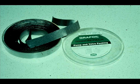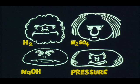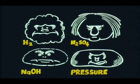Graphoil is another multipurpose packing. It is an all-graphite material that requires no lubrication. Graphoil can tolerate temperatures in excess of 1200 degrees Fahrenheit. Severe services such as hydrogen, acid, caustic, or extreme pressure require special packing and lubricants.